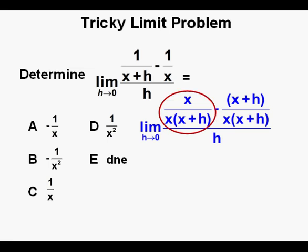From here we can simplify the numerator by taking x over x times quantity x plus h and subtracting this expression x over x times quantity x plus h. And that leaves us with negative h over x times quantity x plus h, and that's as simplified as we can make the numerator.